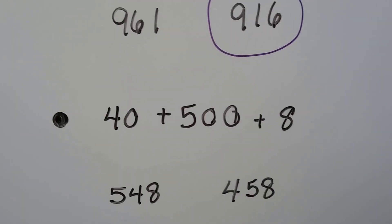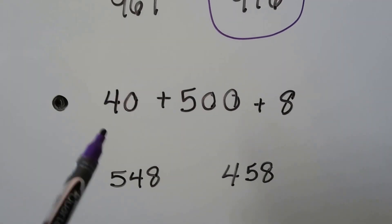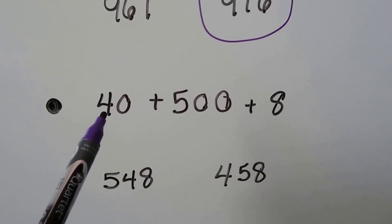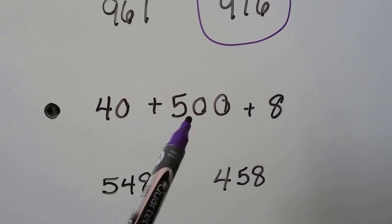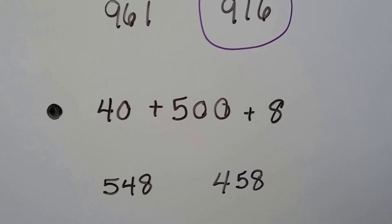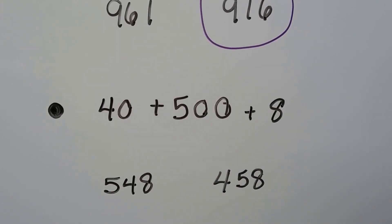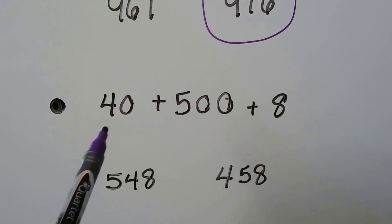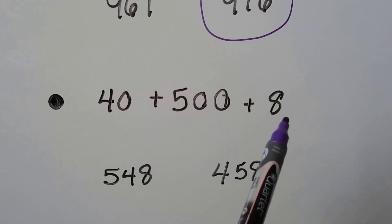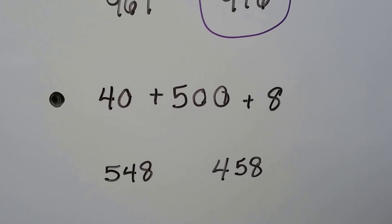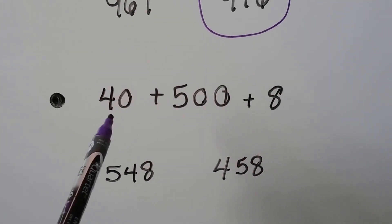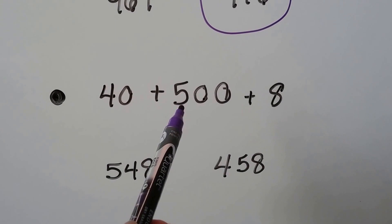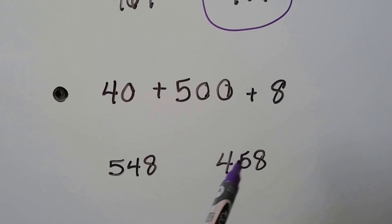Okay, let's try this one. Now, this one's tricky. Be careful. We have 40 plus 500 plus 8. So what number is in the hundreds place? Do you think this is 458? Be careful. Look, that's 4 tens. That's 5 hundreds. So it's not this one.